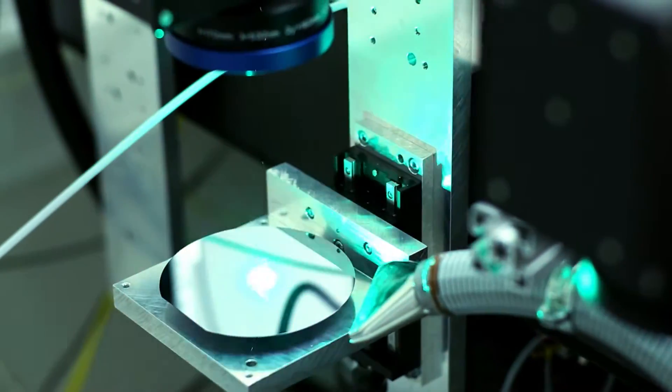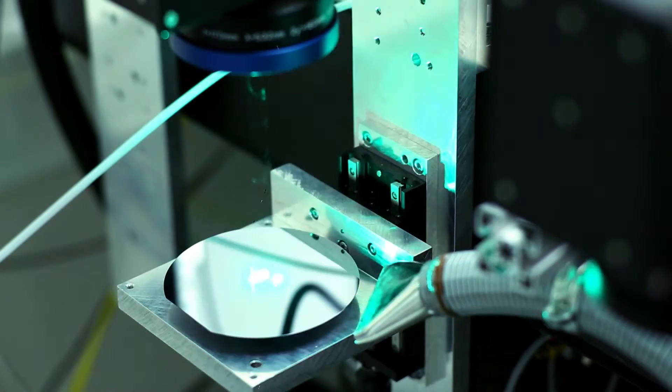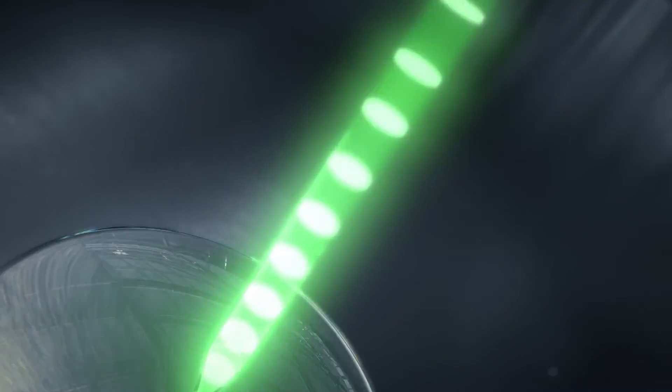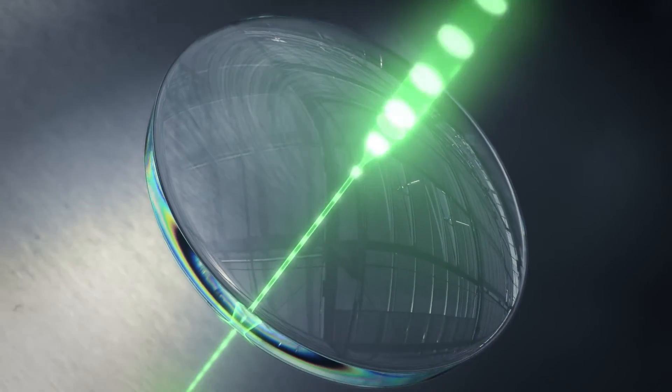During the manufacturing process, the ultra short pulse laser briefly heats the material to roughly 6,000 degrees Celsius, hotter than the surface of the Sun, ablating the material.